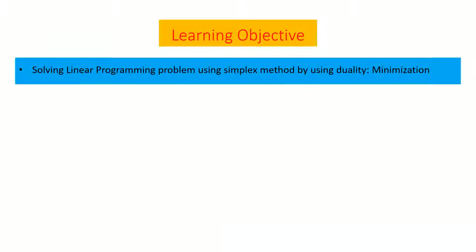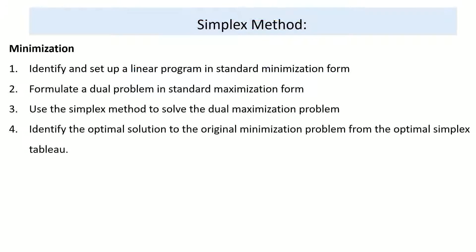The learning objective of this lesson is solving linear programming problems using the simplex method by using duality in the case of minimization. We apply duality to solve the minimization problem using maximization. The steps are: first, identify and set up a linear program in standard minimization form; second, formulate a dual problem in standard maximization form; third, use the simplex method to solve the dual maximization problem; fourth, identify the optimal solution to the original minimization problem from the optimal simplex tableau.